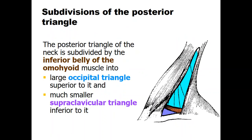In summary, the vascular contents of the posterior triangle include the occipital artery at the upper part, and the suprascapular and transverse cervical arteries in the lower part. The nerve contents include the accessory nerve, the cutaneous branches of the cervical plexus, and the roots of the brachial plexus, as well as the phrenic nerve. The lymph node contents include supraclavicular lymph nodes and occipital lymph nodes.